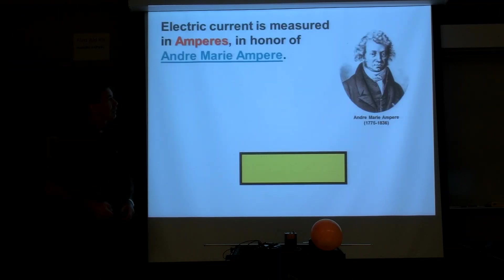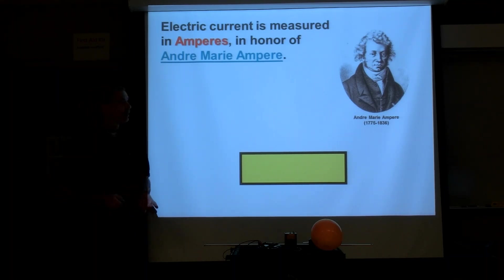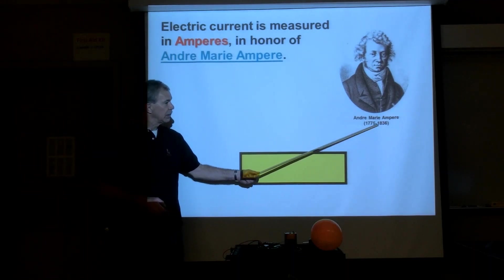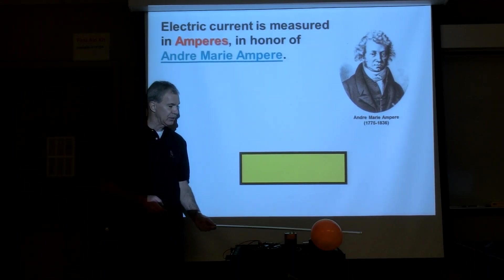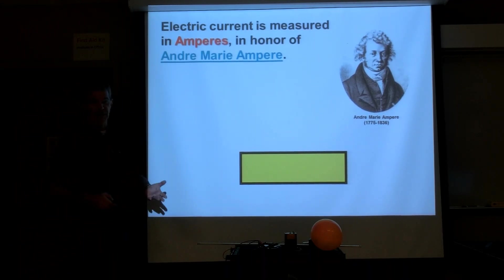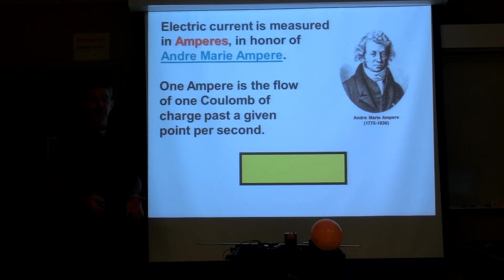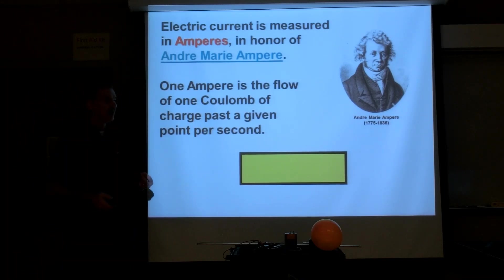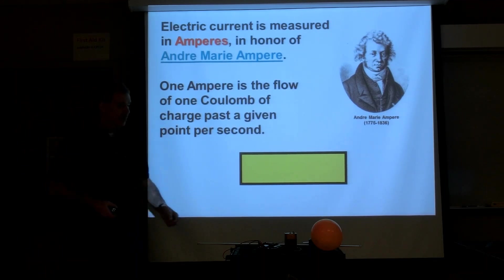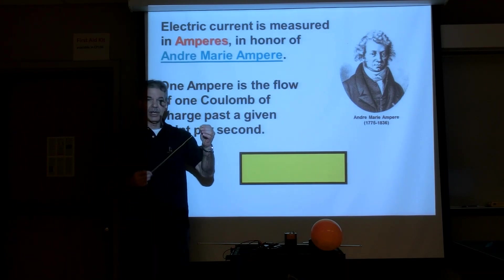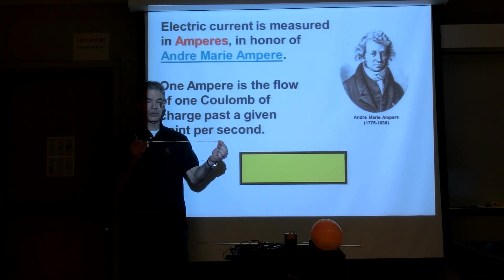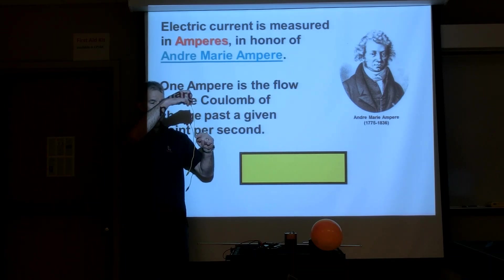We measure the flow of charge. The unit used to measure the flow is called the amp or the ampere, named after Andre Marie Ampere, who lived in that same late 1700s to early 1800s era as many of our other famous electricians. One amp of current means one coulomb of charge flows past a point every single second — that is, 6.25 billion billion electrons go past a point every second.